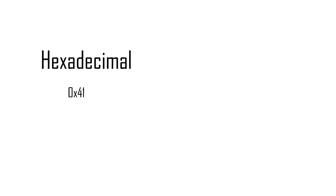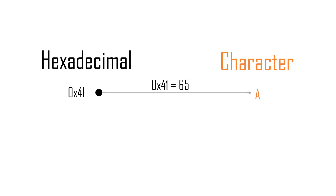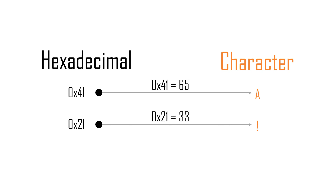For example, the number 65 represented in hexadecimal — 41 — is defined to represent capital A. The number 33 in hexadecimal — 21 — is defined to represent an exclamation mark.